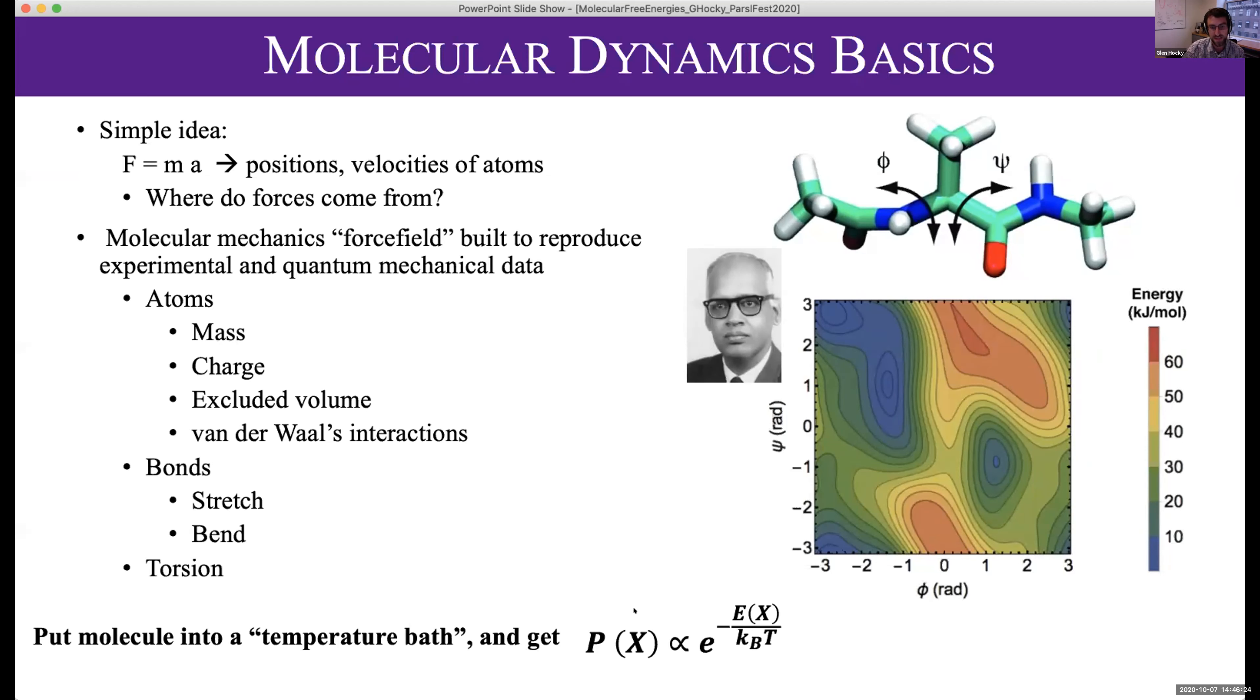In reality, molecules are in solution and bump into stuff. That makes it so each molecular structure we observe has probability of appearing that is related to the exponential of its energy, called the Boltzmann distribution. When we do molecular dynamic simulations or Monte Carlo simulations, we're sampling from this statistical distribution.